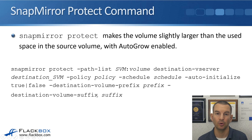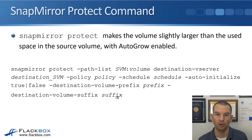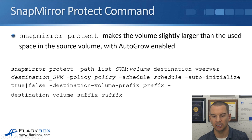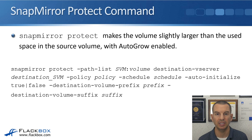Using that example where we had vol1, vol2, and vol3, if I set the destination volume suffix to _DP, it will create three destination volumes: vol1_DP, vol2_DP, and vol3_DP. The SnapMirror protect command is the more modern way of doing it — it allows you to do everything with one command rather than three, but either way is valid.